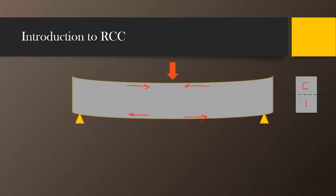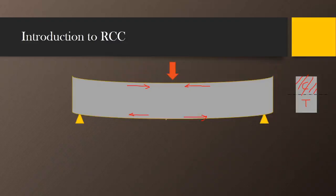At the same time, the bottom fibers will be in tension. So the bottom portion of the beam section will be in tension. Since concrete is very strong in carrying compressive stresses, the concrete in the top portion will carry compressive stresses effectively. However, concrete is not able to sustain tensile stresses.